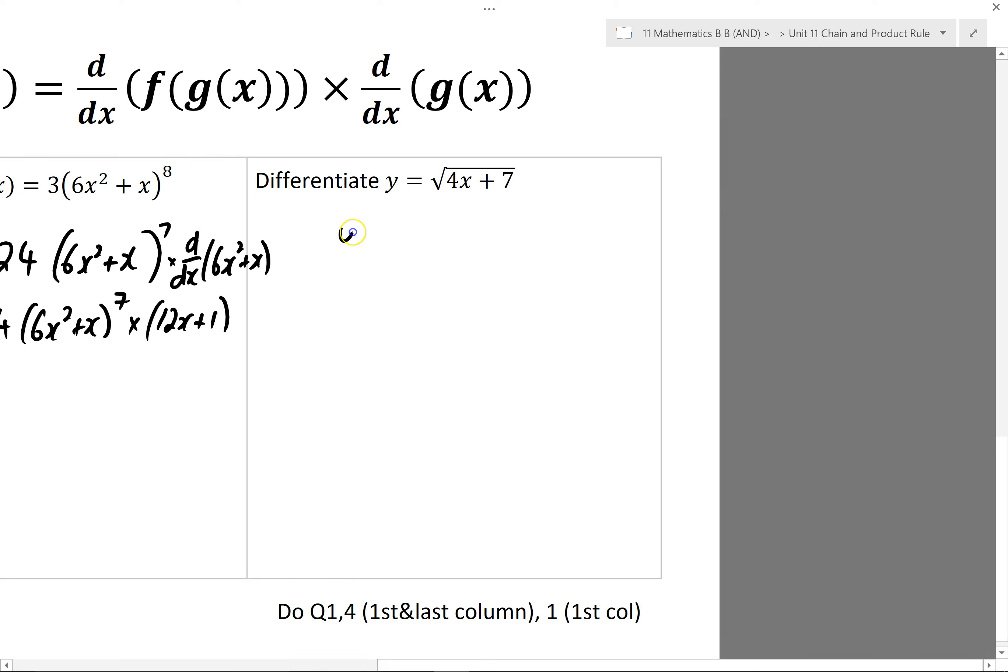Whenever I've got a square root function, I recognize that that really means to the power of a half. And now I can have a go at differentiating. So I'll pretend that's not there and differentiate it like normal. Multiply by half, reduce the power by 1. A half take away 1 is minus a half. And then I can look inside, 4x plus 7 multiplied by the derivative of 4x plus 7.